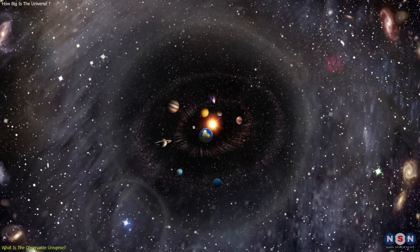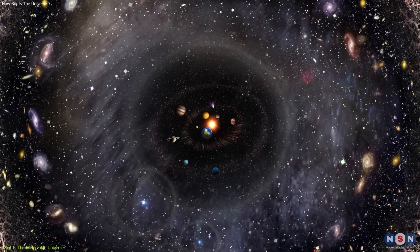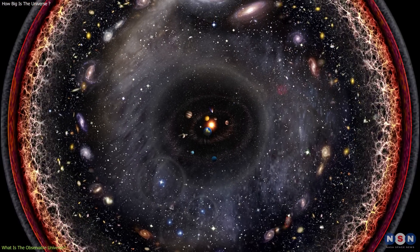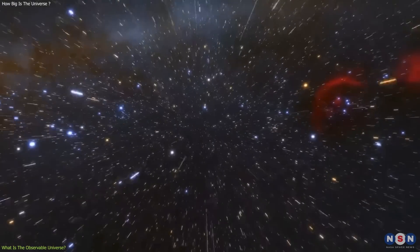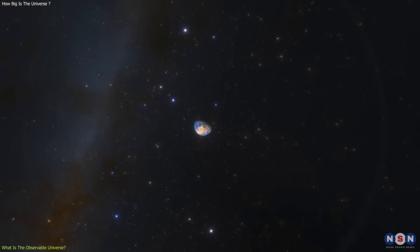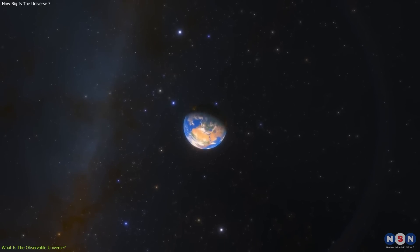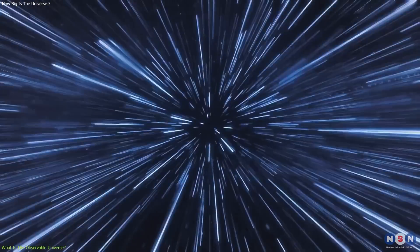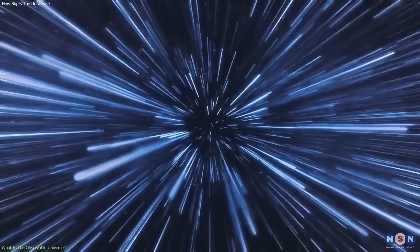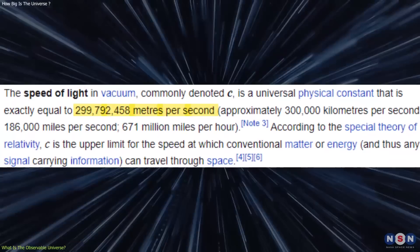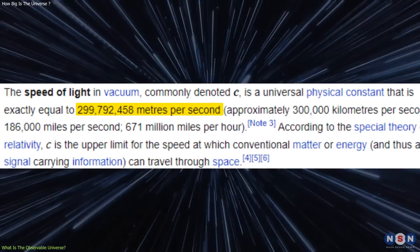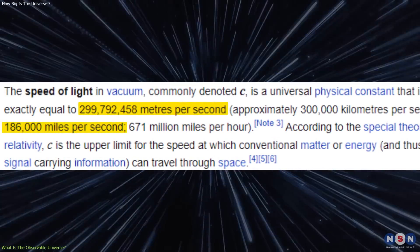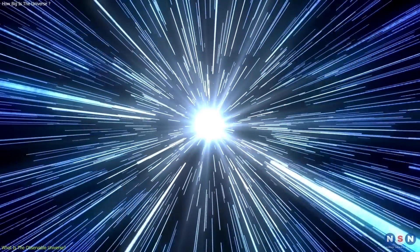The observable universe is the part of the universe that can be seen from Earth. But what does that mean exactly? Well, it means that we can only see the light that has reached us from distant objects since the beginning of the universe. You see, light travels at a finite speed, which is about 300,000 kilometers per second, or 186,000 miles per second. That means that it takes time for light to travel from one place to another.